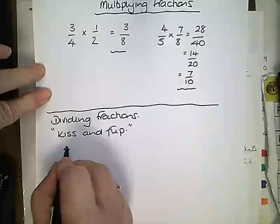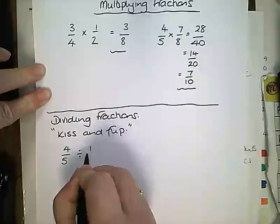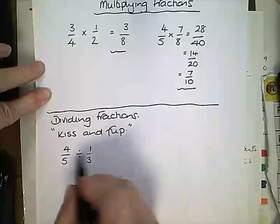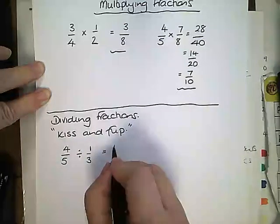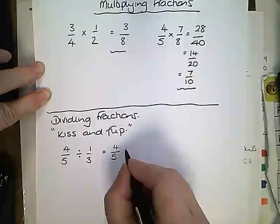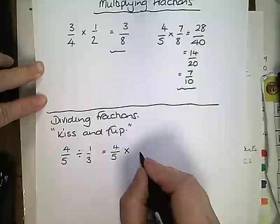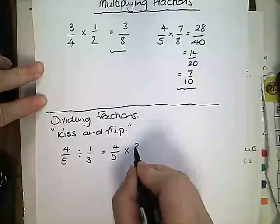For example if I have 4 fifths divided by 1 third, I am going to keep the first fraction the same. Always keep the first fraction the same. So 4 fifths. Change this into a times sign. That's your kiss. And then flip the second fraction so it becomes 3 over 1.